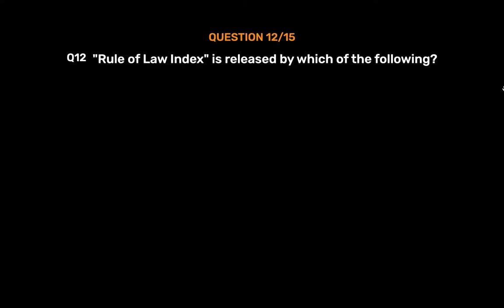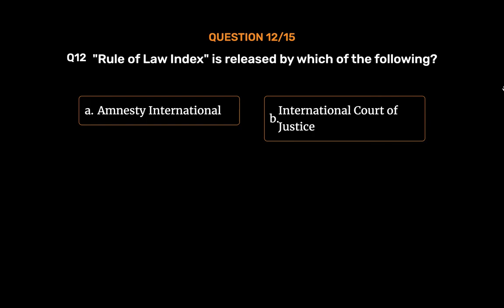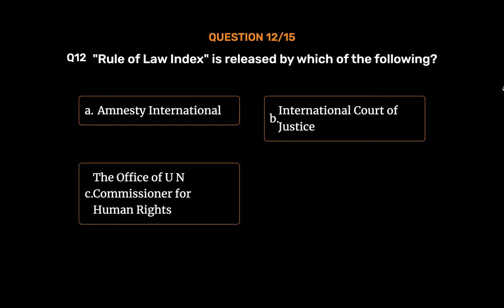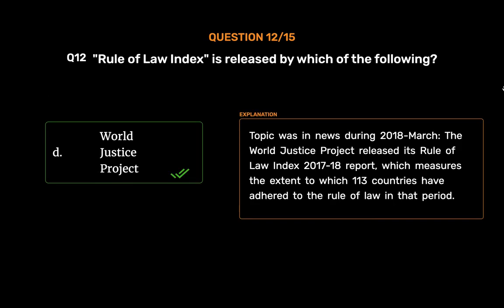Question No. 12. The Rule of Law Index is released by which of the following? Option A: Amnesty International. Option B: International Court of Justice. Option C: The Office of UN Commissioner for Human Rights. Option D: World Justice Project. The correct answer is Option D: World Justice Project. In 2018, the World Justice Project released its Rule of Law Index 2017-18 report, which measures the extent to which 113 countries have adhered to the rule of law.